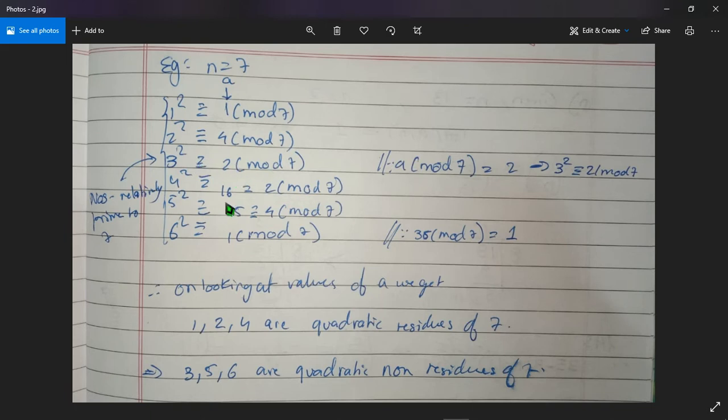3 squared minus 2, if you see, will give you 9 minus 2 is 7. 7 divided by 7 is giving you remainder as 0, and that is why we get the value of a with respect to 3 squared as 2. Similarly, other numbers if you see: 4 squared you will get the value of a as 16, 5 squared you will get the value of a as 25, 6 squared you will get the value of a as 1.